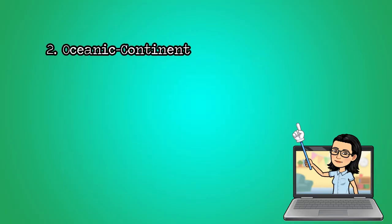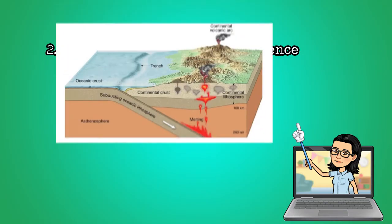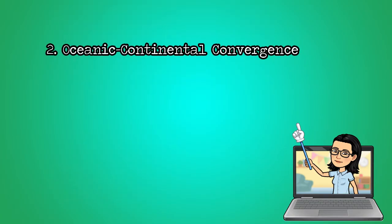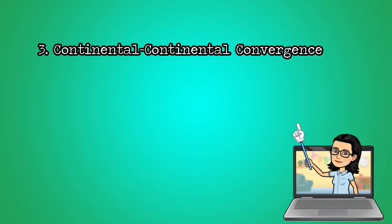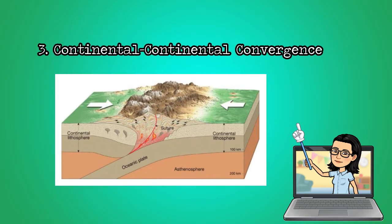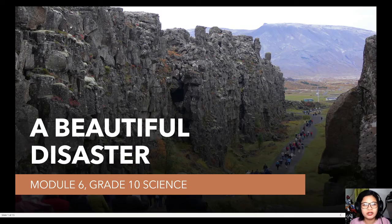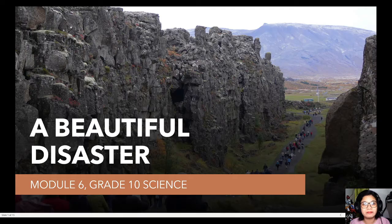For Oceanic-Continental Convergence, it would also result in a volcanic island arc, a trench, and earthquakes. And finally, Continental-Continental Convergence results in mountain ranges. We also learned some examples of these geologic formations which arise from the different types of convergent plate boundaries.